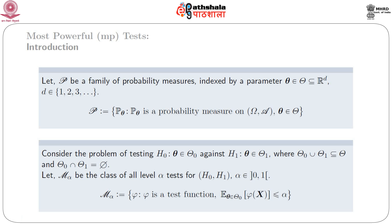Now consider the problem of testing the hypothesis H naught: theta belonging to Theta naught, against H1: theta belongs to Theta 1, where Theta naught union Theta 1 is a subspace of the whole space and Theta naught intersection Theta 1 is equal to the null space. Let M_alpha be the class of all level alpha tests for H naught against H1, where alpha belongs to the closed interval [0,1].